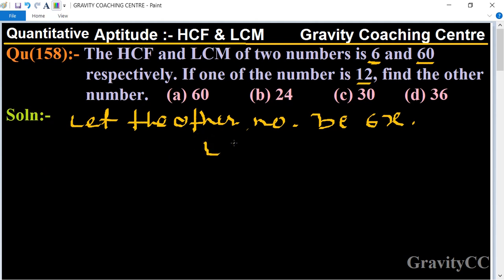According to the question, LCM is also given as 60. Now we find the LCM of 6x and 12. The LCM of 6x and 12 is 6 × x × 2 = 60.